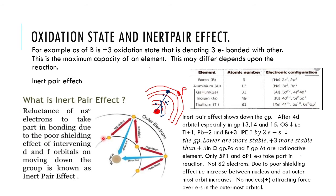After the introduction of d and f orbitals, the shielding effect weakens. The attractive force of the nucleus over the outermost electrons decreases, so the ns² electrons do not participate in reactions. Only the np electron participates, giving a +1 oxidation state. This means down Group 13, the +1 oxidation state becomes more stable.